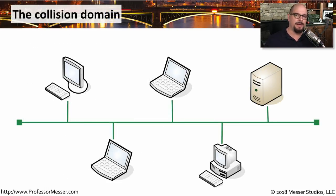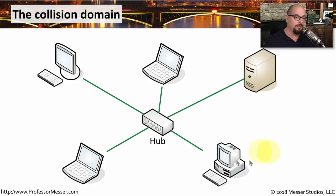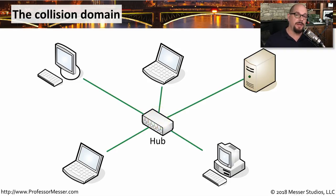We used to connect ethernet networks together with coax — everyone was literally on the same cable, so every station heard all of the other stations communicating on the network. With ethernet hubs, this changed the way the network looked because we were sending all of our wires down to one central device, but the devices still all heard each other communicating, very similar to the way it worked on a coax network. With a hub in the middle, two stations could still communicate at the same time and a collision would occur.